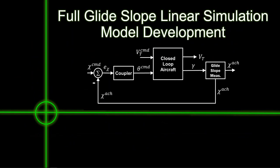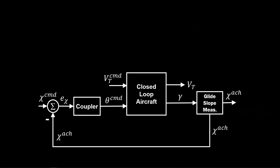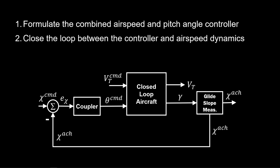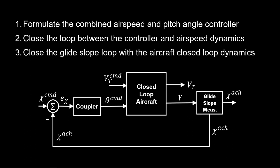We've got both loops tuned. We now show how to create the complete closed-loop system by bringing together individual components from the previous sections into a single system. First, we formulate a combined airspeed and pitch angle controller. We take that controller and close the loop between it and the airspeed dynamics. We then close the loop with the glide slope controller, leading to the full diagram.